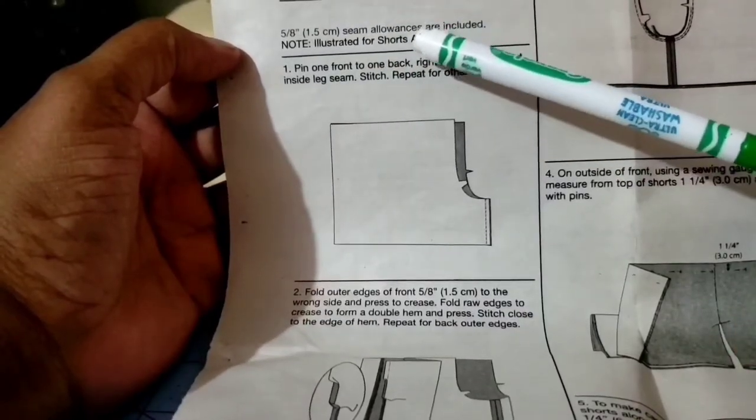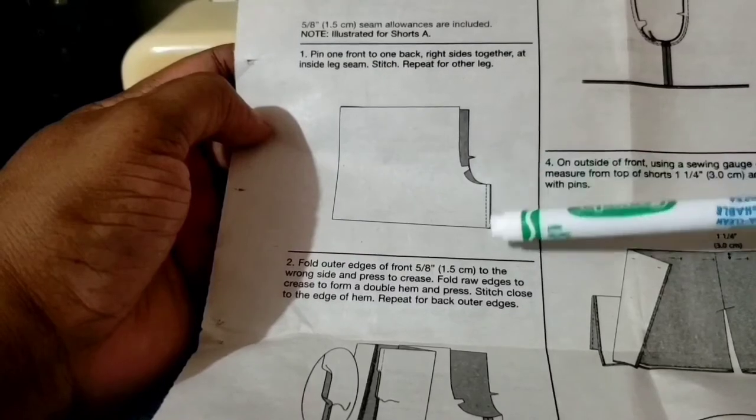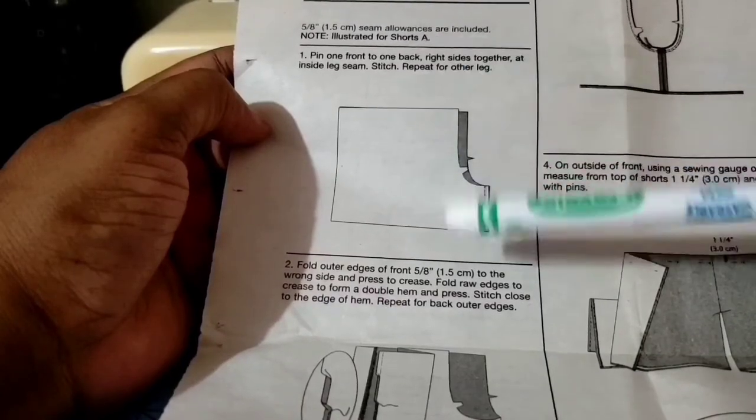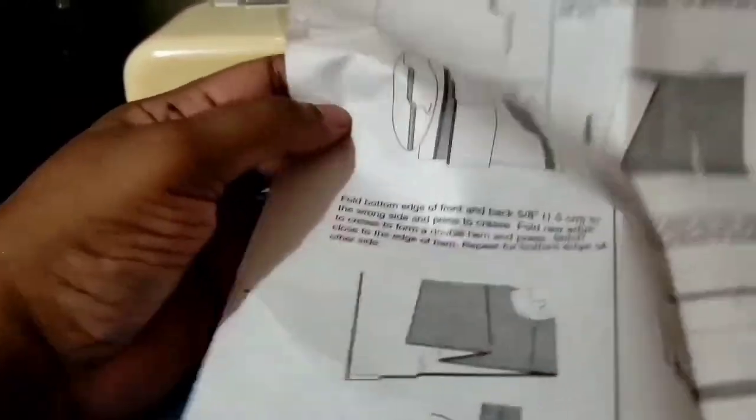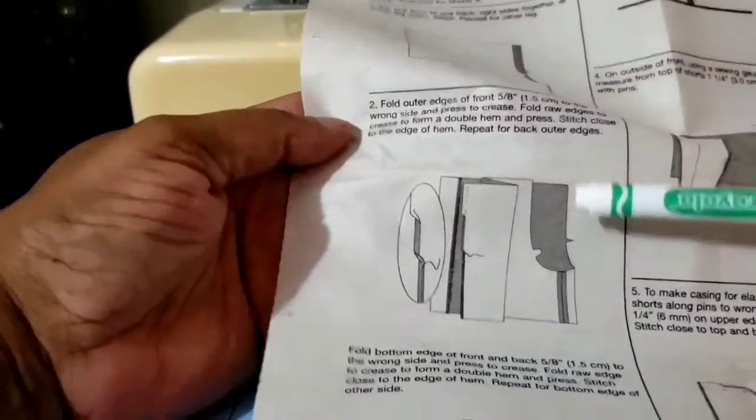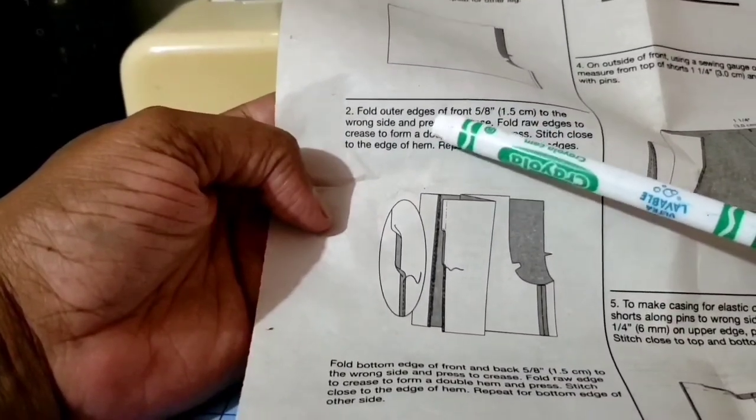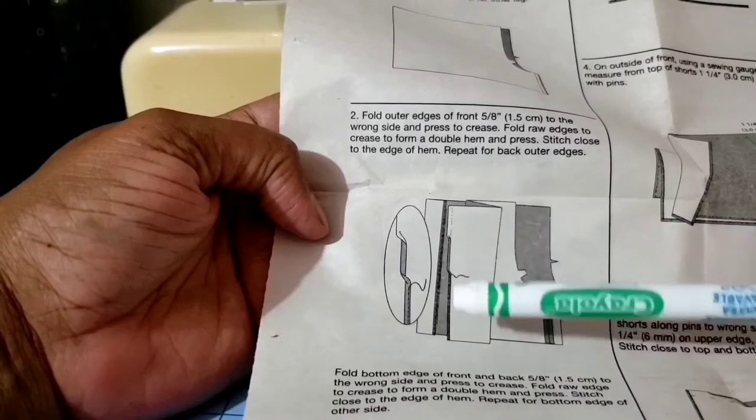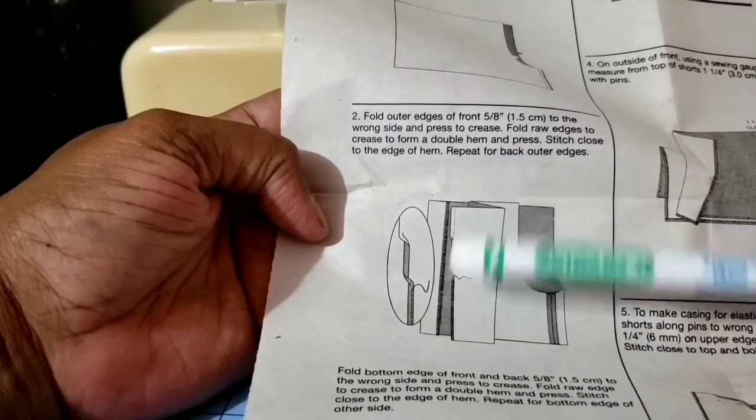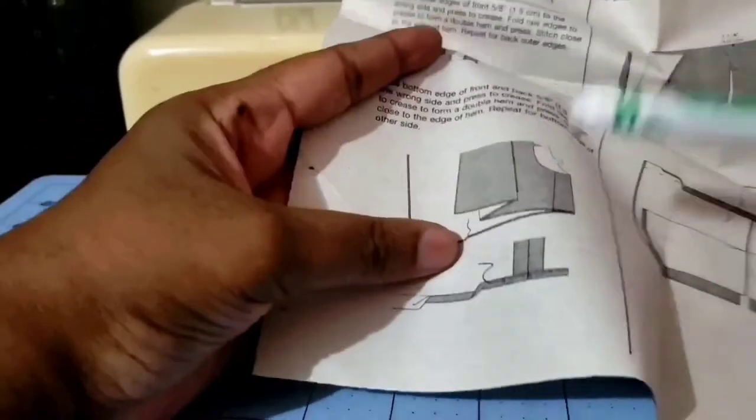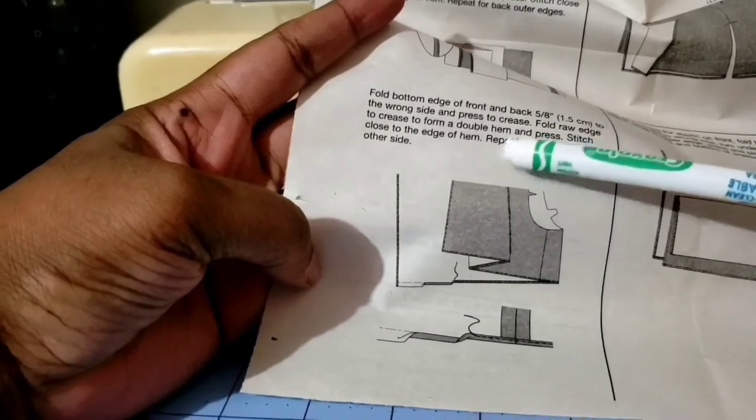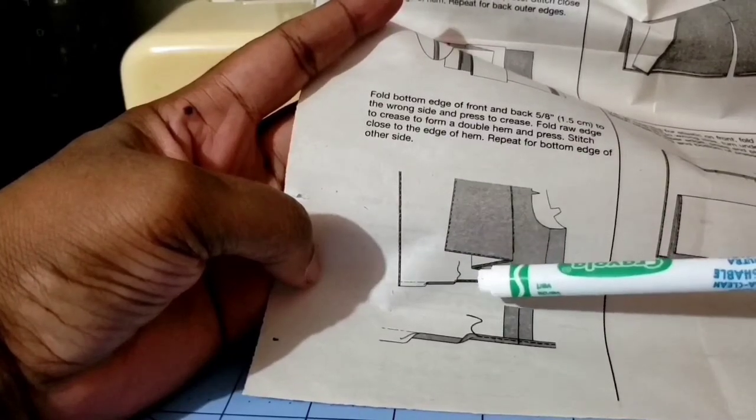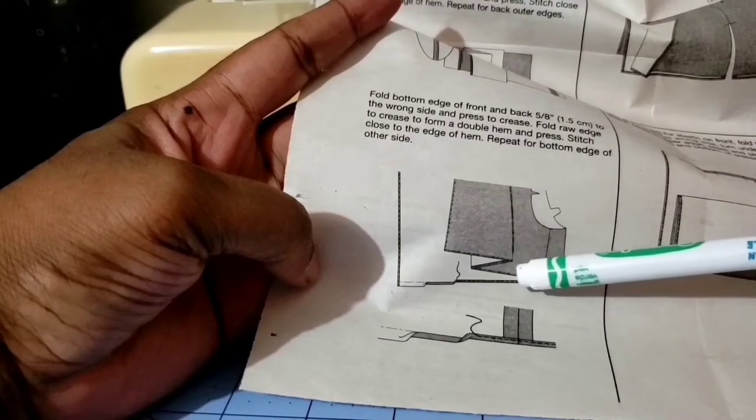Seam allowance is five-eighths of an inch. It's very simple. We're starting off by just stitching the leg seam so we're going to grab a front and a back, stitch the leg seam and repeat for the other leg. The next step is to finish the outer edges which is really the sides by doing a double hem and stitch that. Notice you're not stitching the outer edges together at all, you're just finishing the sides and finishing the bottom.